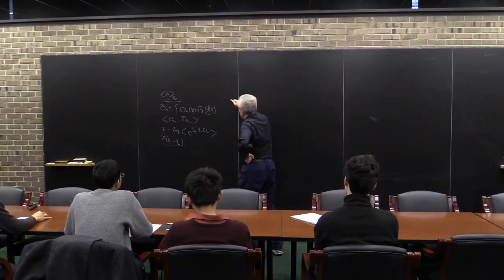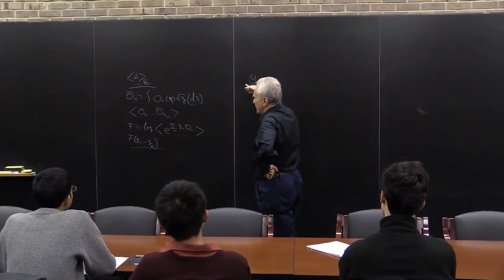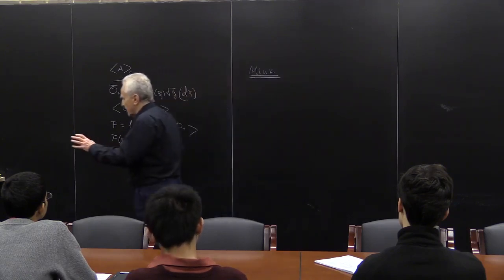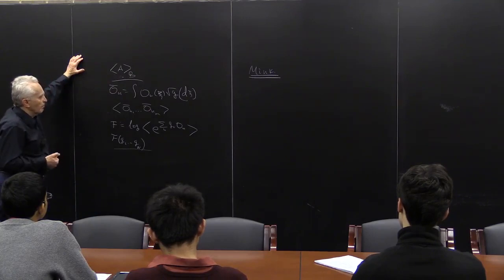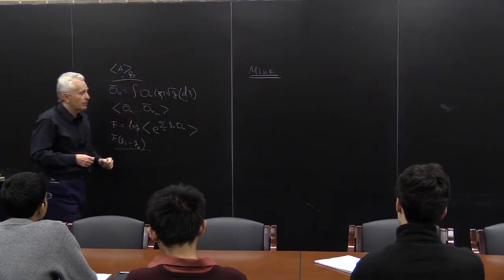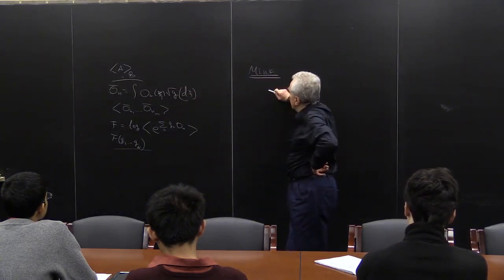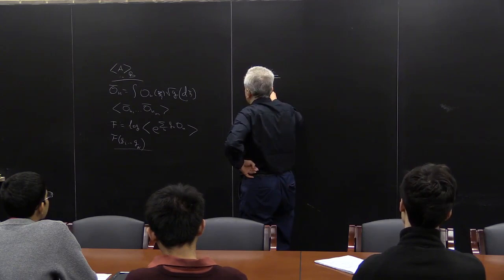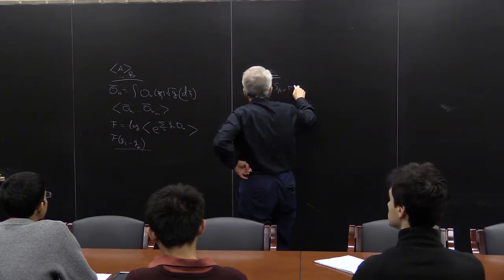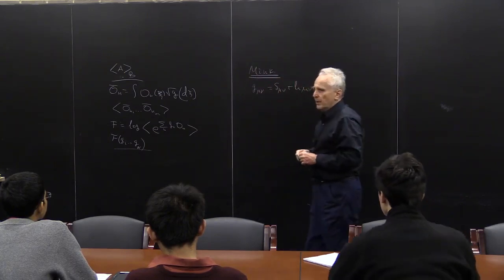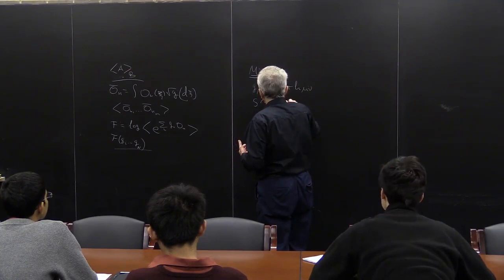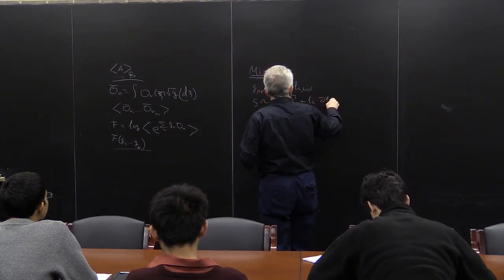Let's start with the Minkowski case. This is a general discussion, not restricted to two-dimensional gravity. In Minkowski space, we quantize Einstein theory — we take the metric tensor, look at small perturbations h of the metric tensor. The Einstein action gives us a structure like dh² + h·dh² and so on. As you know, it gives a non-renormalizable theory, but that doesn't concern me here.